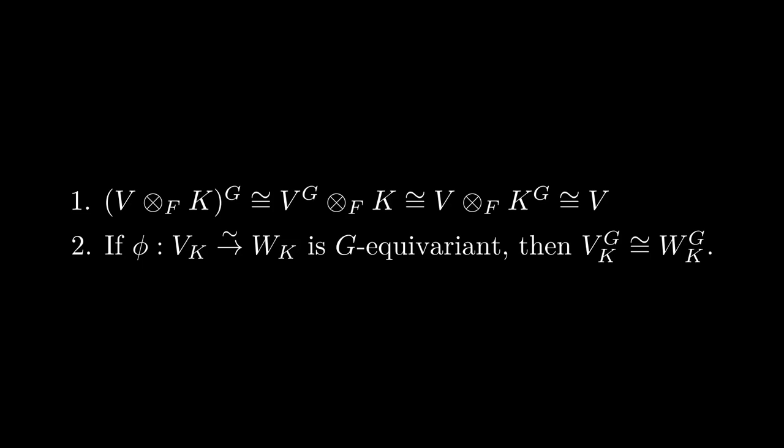Galois descent is essentially a collection of really nice properties about taking fixed fields. The first one here is saying that Galois descent is a sort of inverse to this base change going up, base ascent. If you're taking an F-vector space and lift it to a K-vector space by that process, and then descend back to an F-vector space via Galois descent, then you end up with an isomorphic F-vector space.